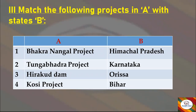Now let's move to the next section: Match the Following — projects in Column A with their states in Column B. The answers are: Bhakra Nangal Project — Himachal Pradesh; Tungabhadra Project — Karnataka; Hirakud Dam — Orissa; Kosi Project — Bihar.